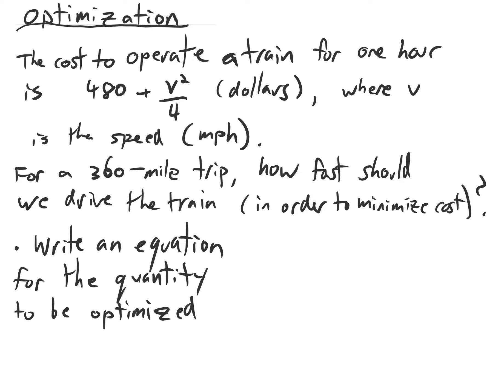Alright, so the quantity that we're trying to optimize is cost. We're trying to keep the cost low. So let's write an equation for the cost and then we'll write a better equation and then we'll write a better equation until we have something that we can use calculus on. My first equation for the cost is that it's going to be the number of hours times the cost per hour.